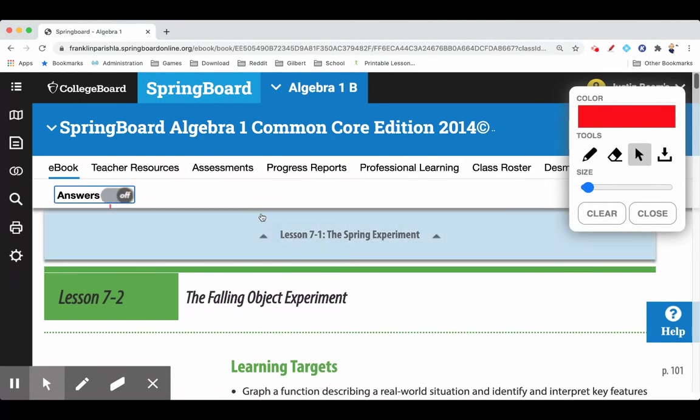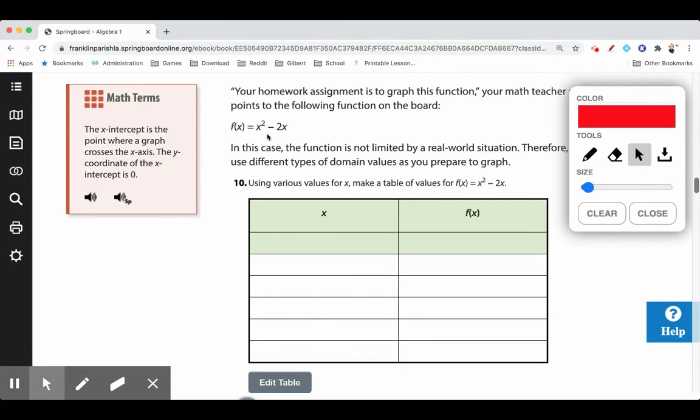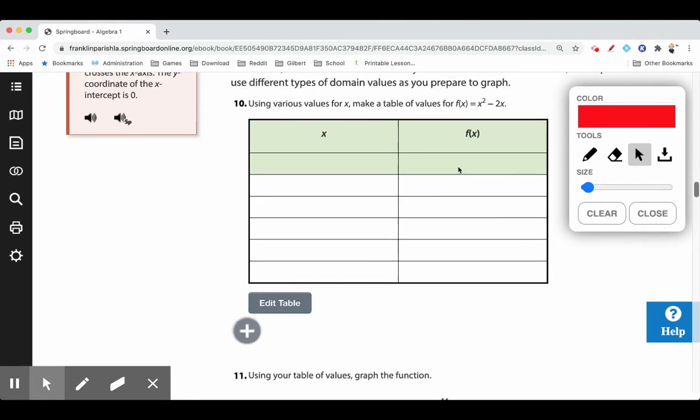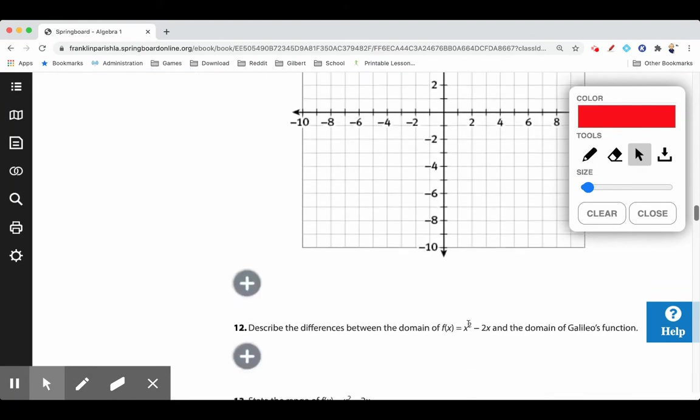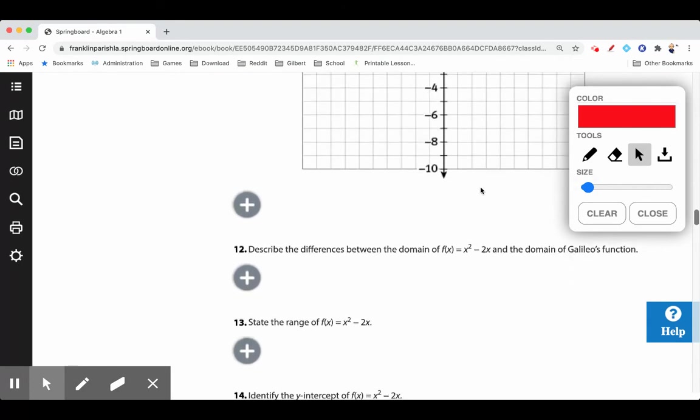All right, so if your teacher gives you this function and there's no situation with it, we don't need to restrict the domain. There's no limitations by real-world situations if they just give you the function without any story behind it. So here's our function: x squared minus 2x. And we're going to want to fill out a chart, a table of points—input, output. We're going to pick some numbers and put them in our inputs, we're going to put them in our equation and work them out and see what we get out as our outputs. Then we'll take those points and we'll graph it and see if there's any discrepancies, any differences between this and the domain of Galileo's function—the range, y-intercept, absolute maximum.